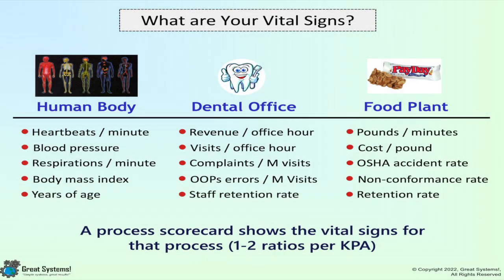What are your process vital signs? A process scorecard shows the vital signs for that process, typically one to two ratios per key performance area. There are a lot of different measures that can be referenced to give you an idea of how well your body is operating, but which measures are the best indicators of body process effectiveness? Every process has vital signs, even if we have yet to define what they are.